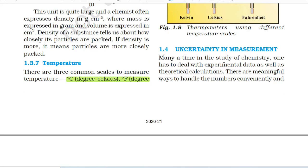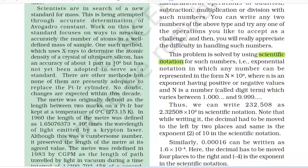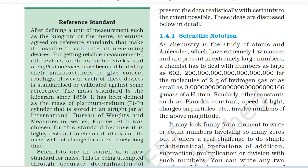1.4 Uncertainty in Measurement. Many a time in the study of chemistry, one has to deal with experimental data as well as theoretical calculations. There are meaningful ways to handle the numbers conveniently and present the data realistically with certainty to the extent possible. After defining a unit of measurement such as the kilogram or the meter, scientists agreed on reference standards that make it possible to calibrate all measuring devices. For getting reliable measurements, all devices such as meter scales and analytical balances have been calibrated by their manufacturers to give correct readings. However, each of these devices is standardized or calibrated against some reference.